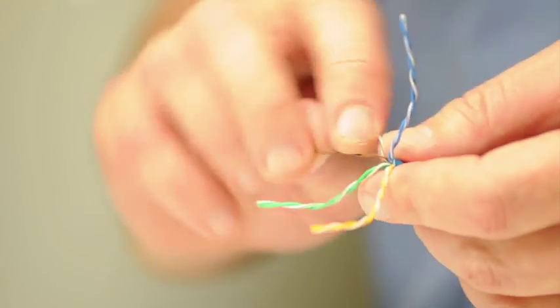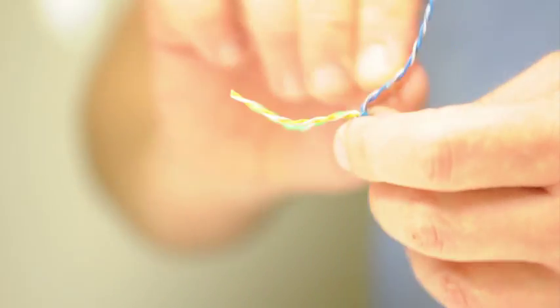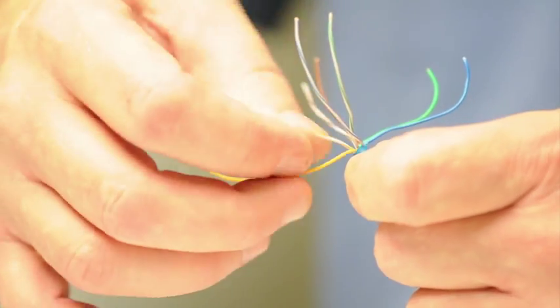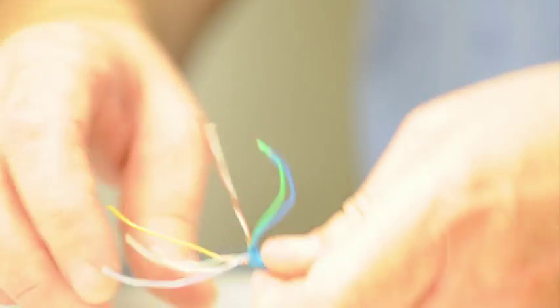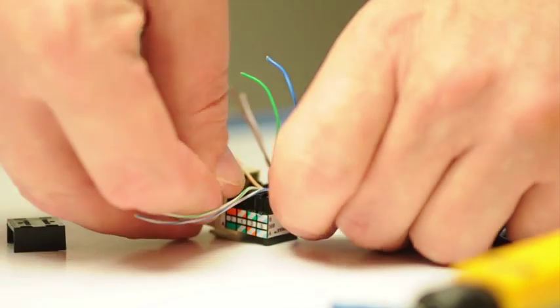Once you have your conductors all the way untwisted, insert them into the IDC connector. Firmly push them into the IDC connector.